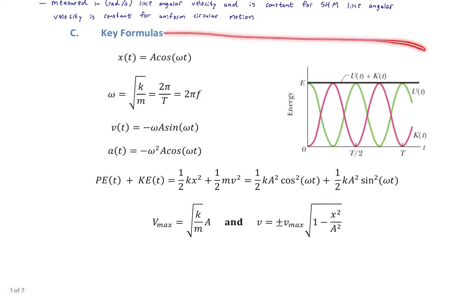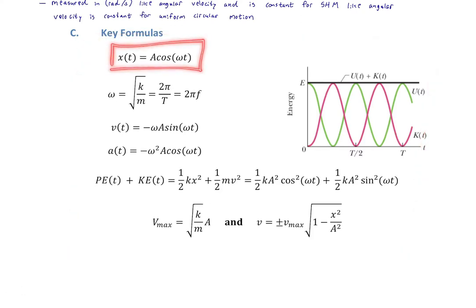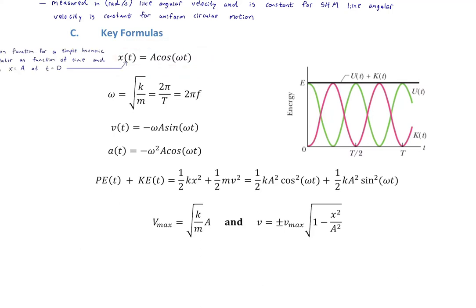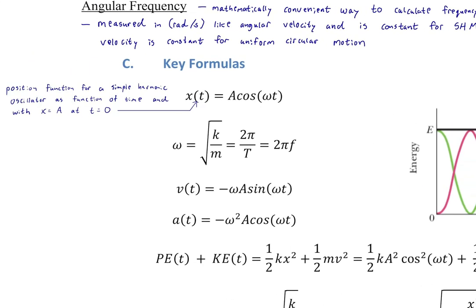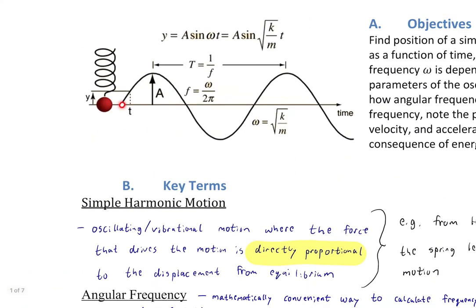Here are our key formulas. The first and most important is the position function for a simple harmonic oscillator as a function of time — something we've never been able to do for oscillating systems before. Specifically, x(t) = A cos(ωt), where A is the amplitude — the maximum distance from equilibrium at t = 0. We use cosine because the system starts at maximum amplitude. Compare this to the opening figure which started at zero and used a sine function: cosine functions start at maximum amplitude.